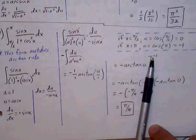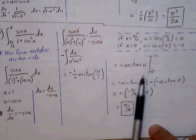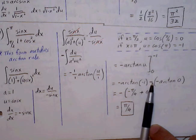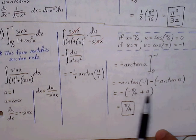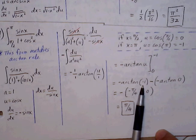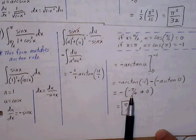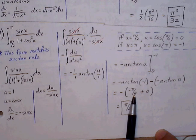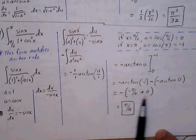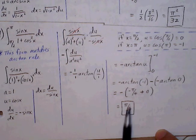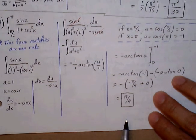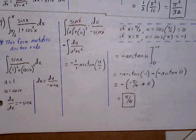Plug in the upper bound first: arctan(−1) for u, then minus arctan(0) for u. When is arctan equal to −1? That occurs at −π/4, in the fourth quadrant. So we have −π/4 plus 0. With the negative out in front, two negatives cancel, leaving us with π/4.